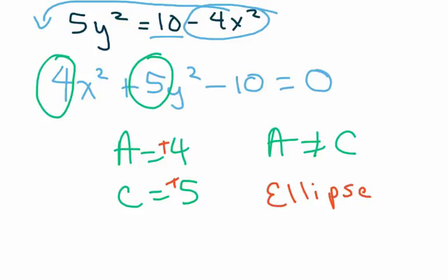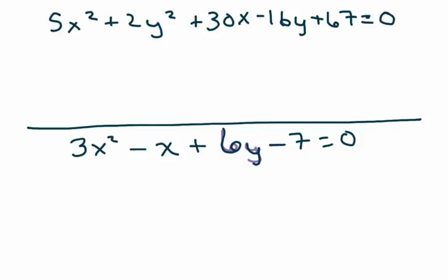All right, and this one, this is all set up for me. My A and my C don't equal. You notice we're not even looking at that. And my signs are both positive, so this is an ellipse.